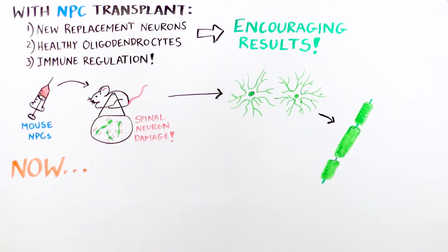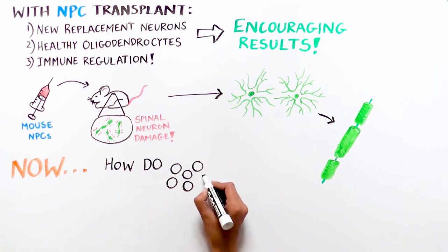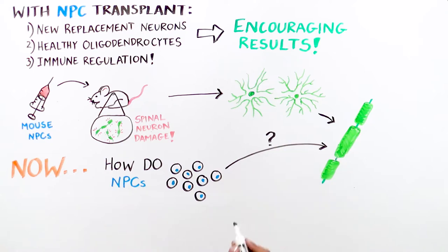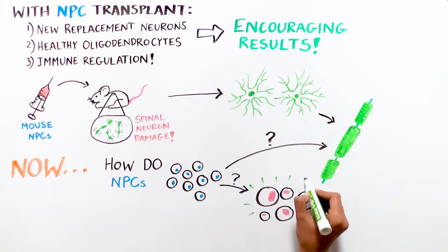The scientists are now hard at work trying to figure out how exactly NPCs help repair damaged neurons and boost the immune system, and to use this information to design new therapies for MS.